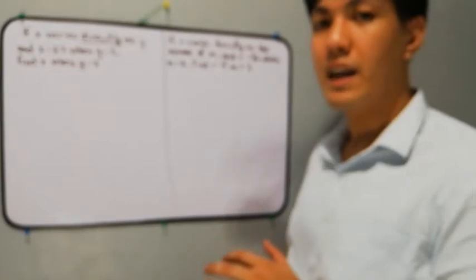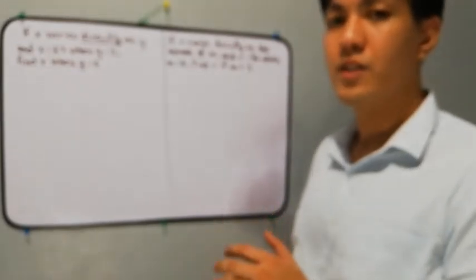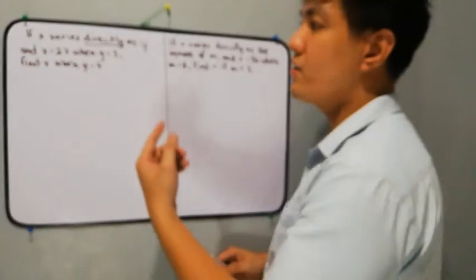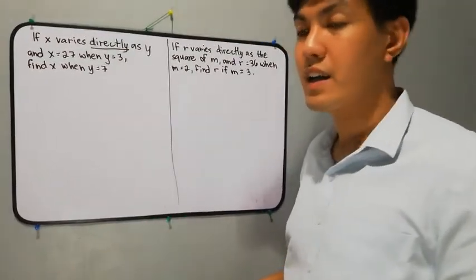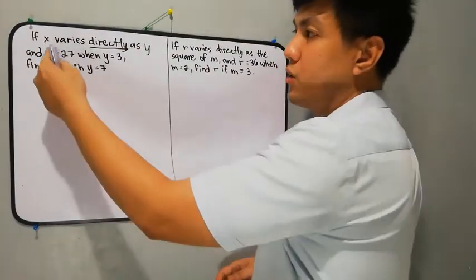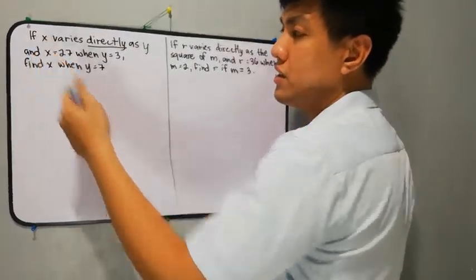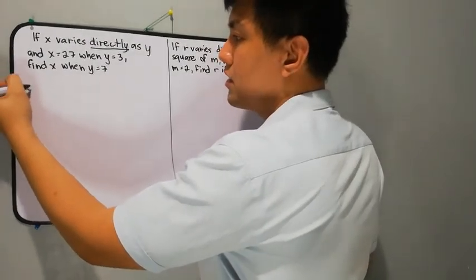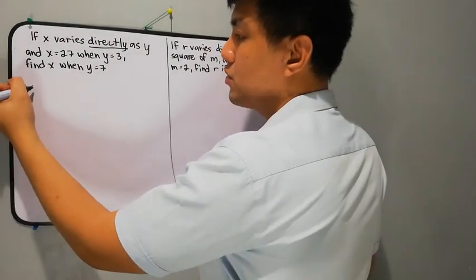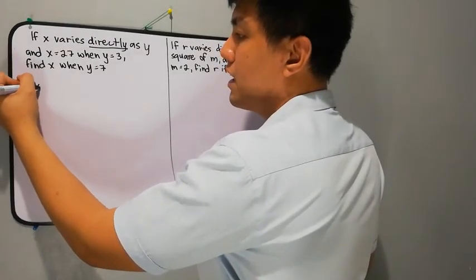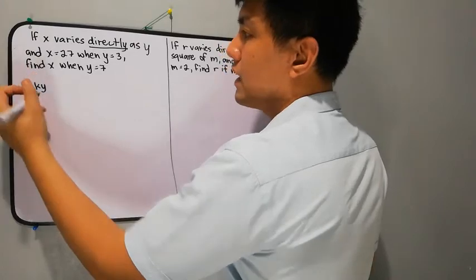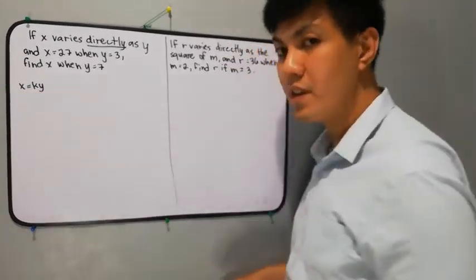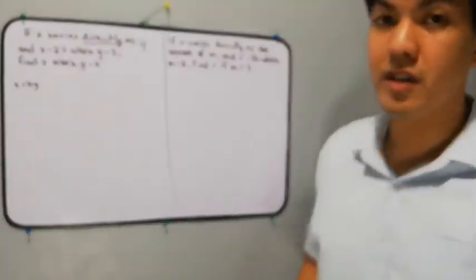So the second step is to identify the equation. The equation here: we have 'x varies directly as y,' so x comes first, therefore the equation will be x is equal to ky. So 'x varies directly as y' gives us that equation. That is our second step.